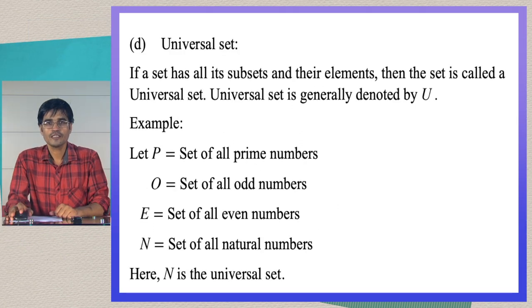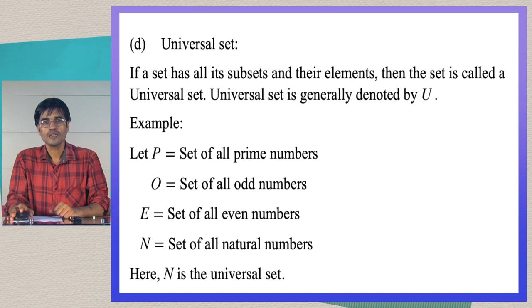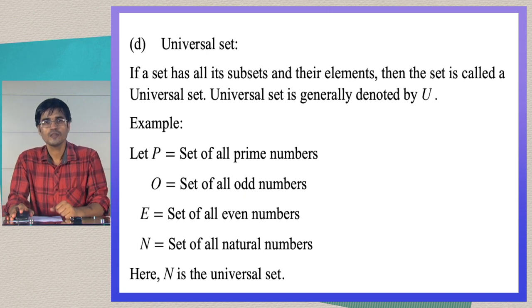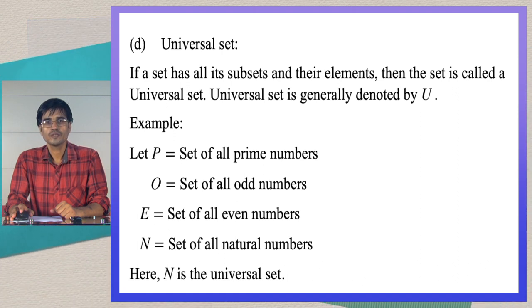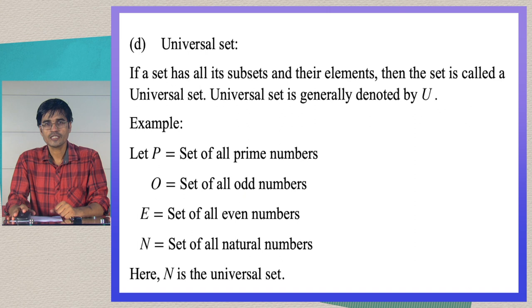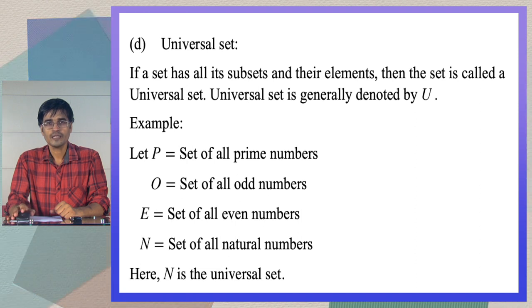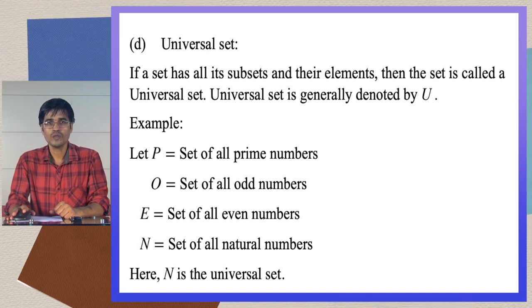Next we define the universal set. If a set contains all its subsets and their elements, then the set is called a universal set. The universal set is generally denoted by the capital letter U. For example: let P be the set of all prime numbers, O be the set of all odd numbers, E be the set of all even numbers, and N be the set of all natural numbers. The larger set here is N, and since P, O, and E are all contained in N, we can say N is the universal set.